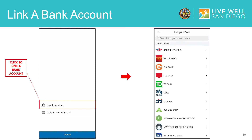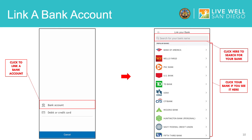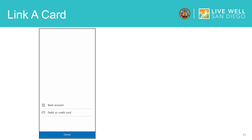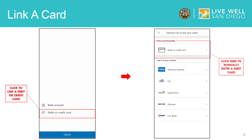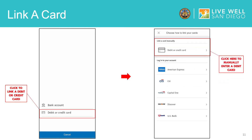On the next screen, click on the name of your bank if you see it. If you do not see your bank in the list, you can still link your bank account by searching for the name of your bank. Once you choose your bank, you will be prompted to enter your bank account number. Now we will link a credit or debit card. Click here to link a credit or debit card. On the next screen, you can manually enter a debit card by clicking here. You can also choose to link a credit card by choosing your credit card company and logging in that way.